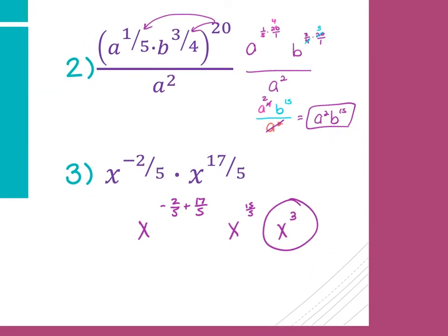Remember, if you were to just write this as a root — for example, 8 to the 2/3 — this becomes the cube root of 8 squared, which becomes 2 squared, or 4. So just a refresher on fractional exponents: if they are fractional and it's a number rather than a variable, you need to simplify them. You want to slide the bottom over as the root index and drop the top down as the power.